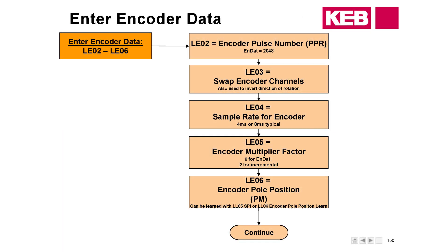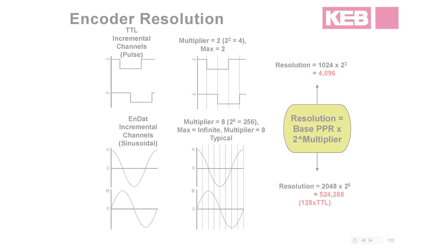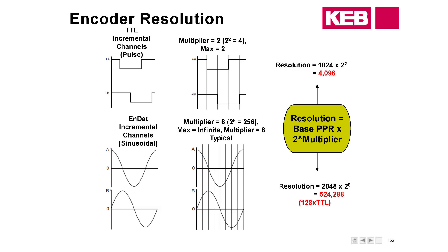On the encoder learn: LE05, the encoder multiplier factor, gives you more resolution on the encoder side. For induction machines, the default value of 2 is used; for NDAT machines, a default value of 8 is used. The TTL signal is a square wave — between the A and B channels they are offset slightly, which is where the voltage differential comes in.